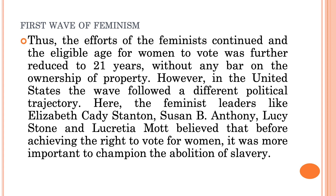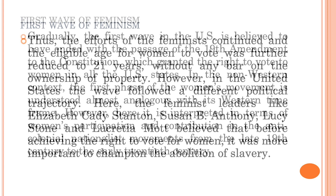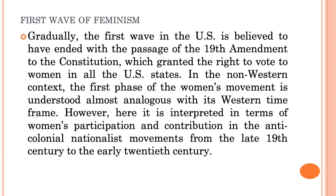As far as the United States is concerned, the wave followed a different political trajectory. Feminist leaders like Elizabeth Cady Stanton, Susan B. Anthony, Lucy Stone and Lucretia Mott believed that before achieving rights for women, it was very important that there should be abolition of slavery. Gradually, the first wave in the US is believed to have ended with the passage of the 19th Amendment to the Constitution, which granted the right to vote to women in all US states.